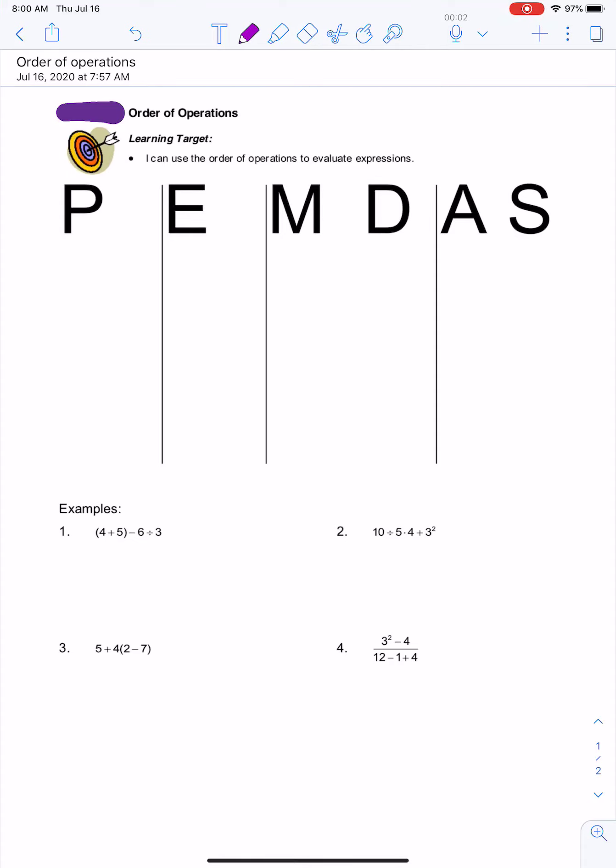This video is going to walk you through using the order of operations. To remember the order of operations, we're going to use a mnemonic device called PEMDAS, or please excuse my dear Aunt Sally. This is an important rule to be able to simplify expressions like the ones down here. You have to follow a specific order or you're going to get a different answer.